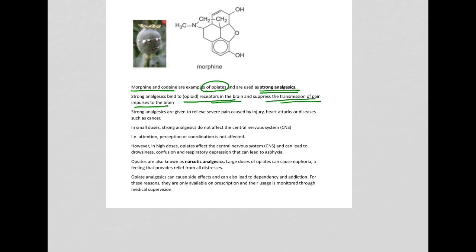Strong analgesics are given to relieve severe pain caused by injury, heart attack, or diseases such as cancer. In small doses, they do not affect the central nervous system, but in high doses, they can affect the brain, leading to drowsiness, confusion, and respiratory depression that can also lead to asphyxia.